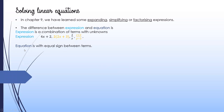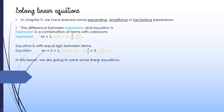On the other hand, an equation is an expression with an equal sign in between. If you have 4x plus 2 equal to 1, then you have one equal sign, and this is considered one equation. These are other examples of equations.